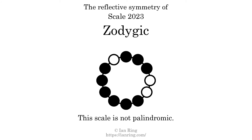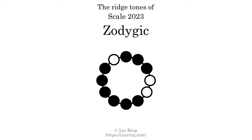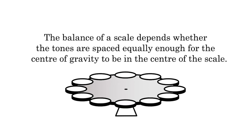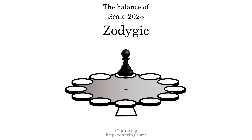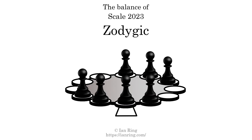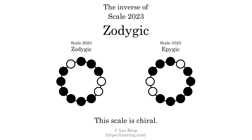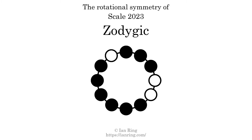This scale has no reflective symmetry. This scale has a different pattern of intervals ascending and descending, so it is not palindromic. This scale has no ridgetones. The balance of a scale depends on whether the tones are spaced equally enough for the center of gravity to be in the center of the scale. This scale is not balanced. The inverse of a scale is a mirror image — what you get when the sequence of intervals is reversed. The inverse of this scale is scale 3325, also known as Pyjic. This scale is chiral; it cannot transform into its inverse by rotational transformation. This scale has no rotational symmetry.